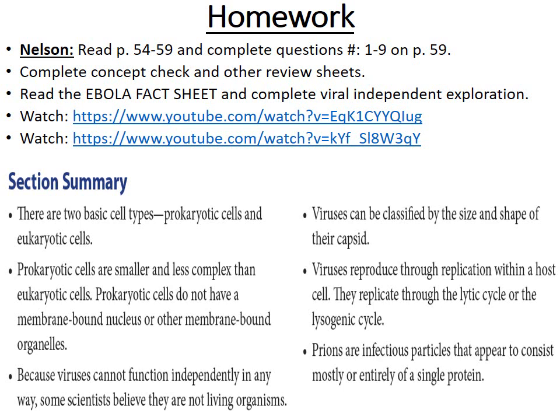The readings for this section are pages 84–59 of the Nelson textbook, along with review questions, review sheets, and an independent exploration sheet on viruses in the news. In summary: viruses are non-living but share some characteristics with living organisms; they can be classified by size, shape, and genome; they reproduce via the lytic or lysogenic cycle; bacteriophages infect bacteria; and there are animal and plant viruses as well. Viroids are loops of RNA that mostly infect plants, and prions are misfolded proteins.